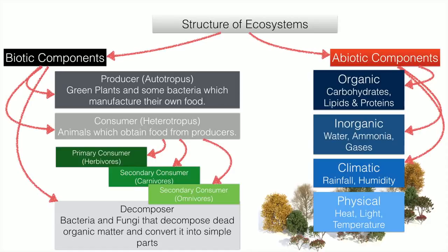Producers, also known as autotrophs, include green plants and some bacteria that produce their own food. Consumers, or heterotrophs, are animals dependent on producers. They are classified as primary, secondary, or tertiary consumers. Primary consumers are herbivores. Secondary consumers can be carnivores — eating only meat — or omnivores, which eat both plants and animals.